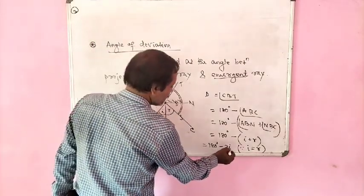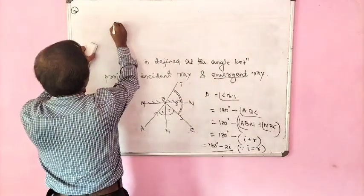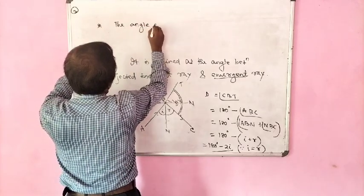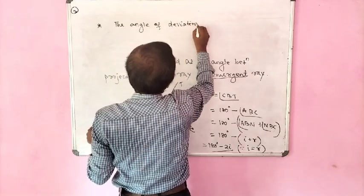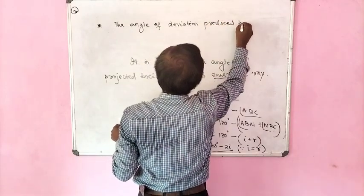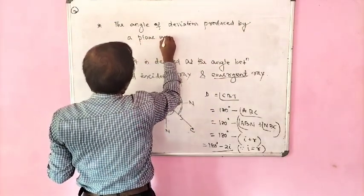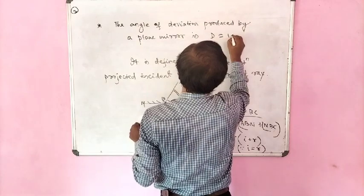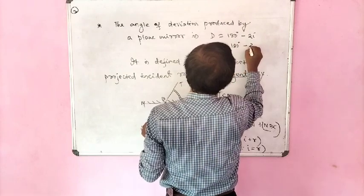The angle of deviation produced by a plane mirror is D = 180 - 2I, or equivalently, D = 180 - 2R, since I is equal to R.